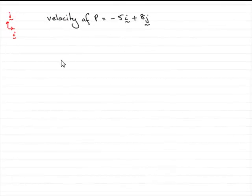Now this part of the question, we're given that the velocity of p is equal to minus 5i plus 8j.